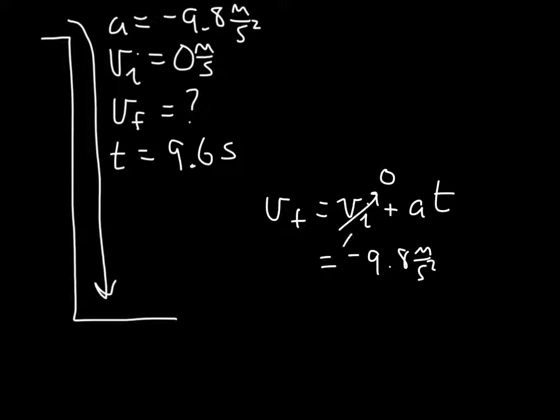Now we know velocity initial is zero, so we just got rid of it without bringing it down into the plug and chug. And then when we plug and chug, we land up with 94 meters per second.